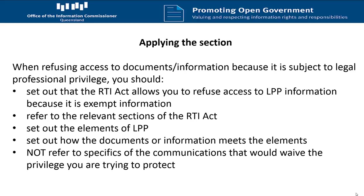When you as the decision maker are satisfied that the documents applied for are subject to legal professional privilege and as such are exempt from release, you're going to need to communicate that to the applicant. When refusing access to documents or information contained in a document because it is subject to legal professional privilege, you should set out that the RTI Act allows you to refuse access to legal professional privilege information because it is exempt information. It's very good to refer to the relevant sections of the Right to Information Act, or if you are dealing with an Information Privacy Act application, to explain why you're referring to those sections. Set out the elements of legal professional privilege that need to be established, and set out how the documents or information applied for meets those elements.